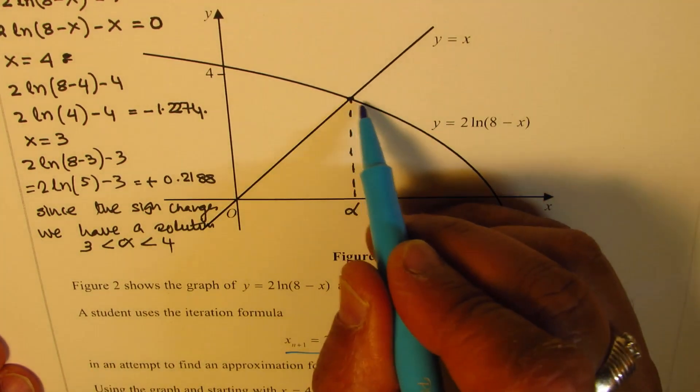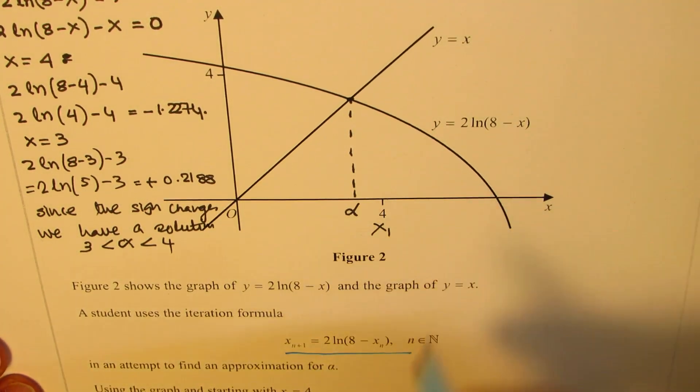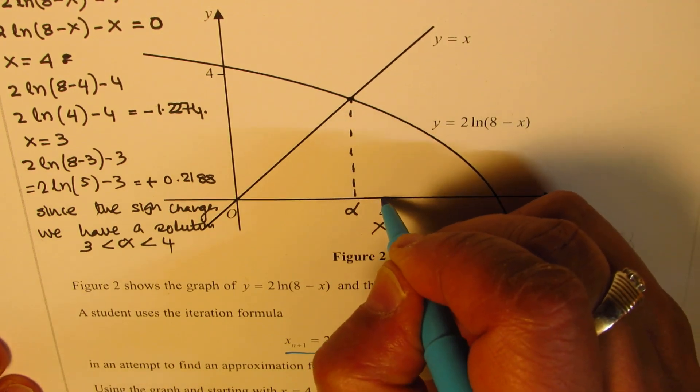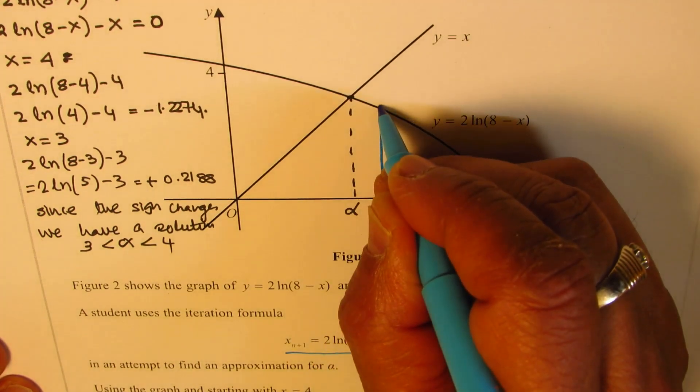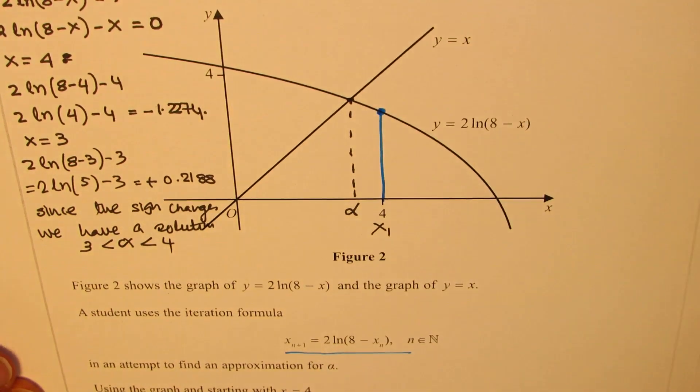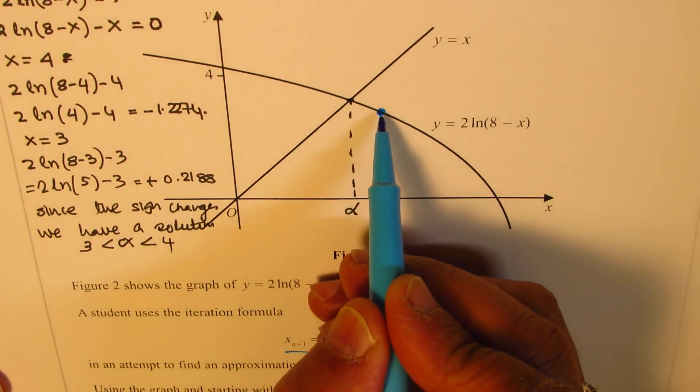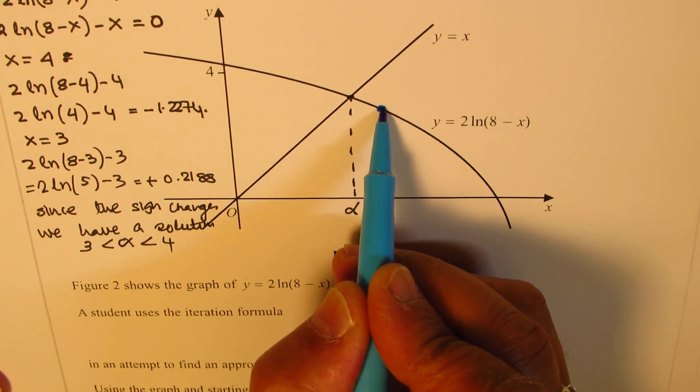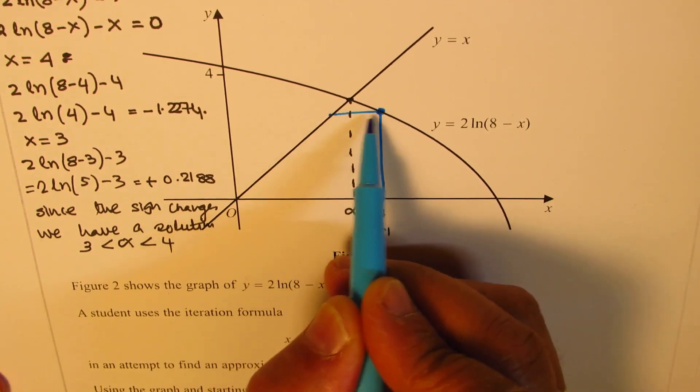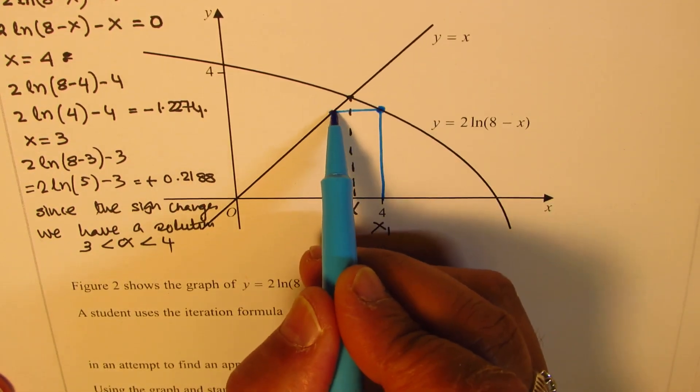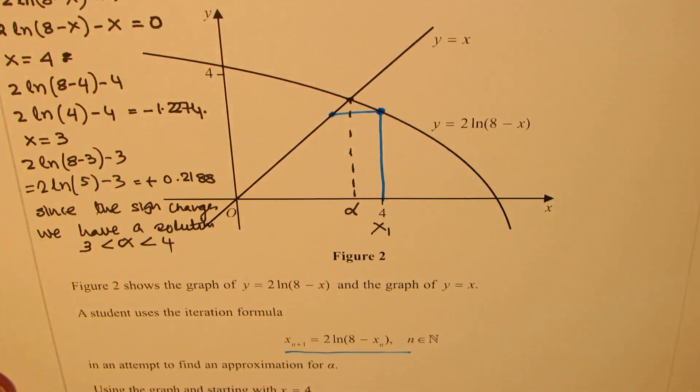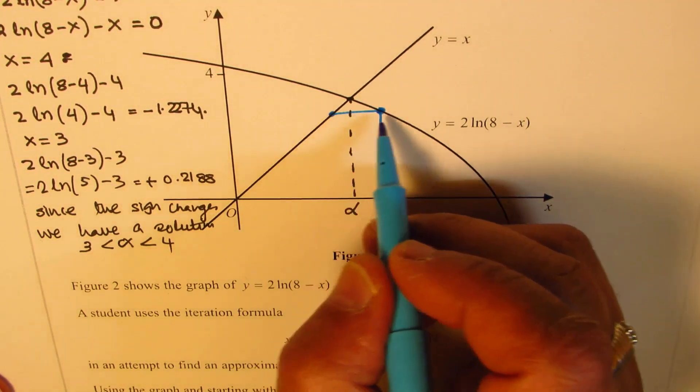If I start with 4, in this particular formula, we are looking into this graph of natural log. At 4, we get a value which is right there. This value is actually corresponding to the y value on x here, so this is lower than y equals x.